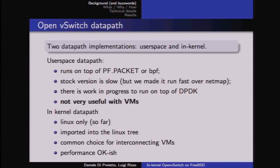We started porting this implementation to FreeBSD using BPF instead of PF_PACKET a couple of years ago. Performance was very bad — the original PF_PACKET version could barely do about 50,000 packets per second. After a number of upstream changes we also made it run very fast on top of NetMap, reaching around 3 million packets per second in user space.